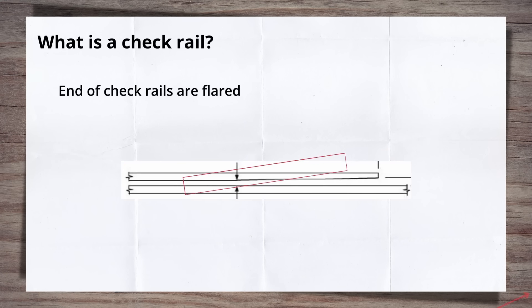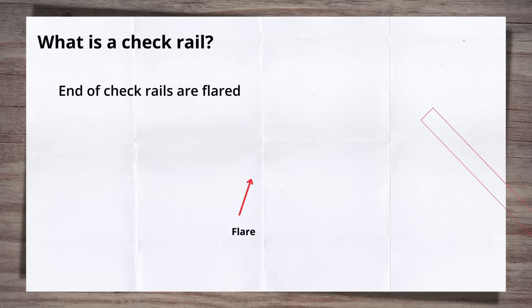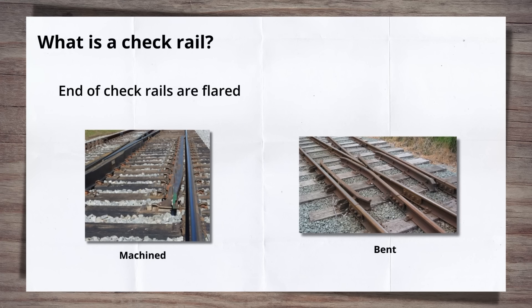A feature of checkrails is the section at the end, known as the flare. This ensures a smooth entry of the wheel into the checked rail area. In modern checkrails it is machined, but older style ones were achieved by bending the rail. The length of this flare depends on the line speed of the track on which the check is installed.